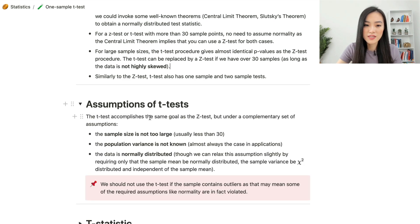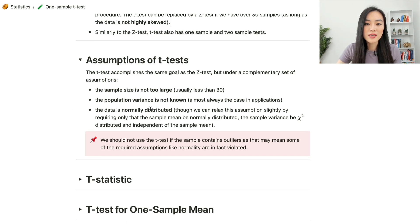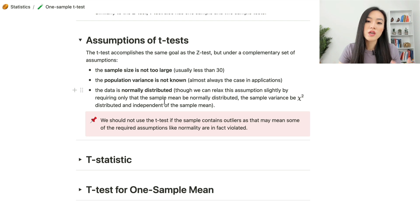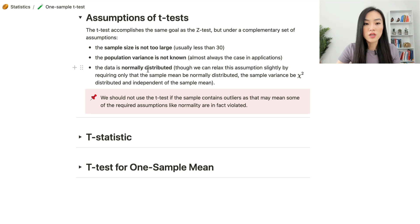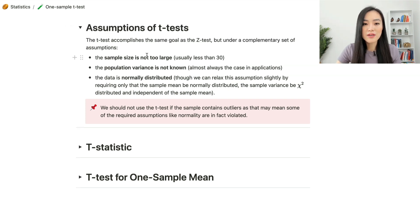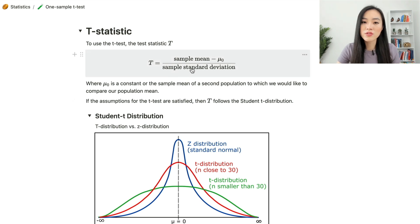The t-test accomplishes the same goal as the z-test but under a complementary set of assumptions: the sample size is not too large — usually less than 30 — and the population variance is unknown, which is almost always the case in practice. The data must be normally distributed, though we can relax this slightly by requiring only that the sample mean be normally distributed and the sample variance be chi-squared distributed and independent of the sample mean. We should not use the t-test if the sample contains outliers.